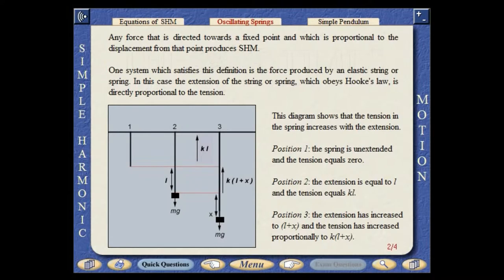Any force that is directed towards a fixed point and which is proportional to the displacement from that point produces SHM. One system which satisfies this definition is the force produced by an elastic string or spring. In this case, the extension of the string or spring which obeys Hooke's law is directly proportional to the tension.